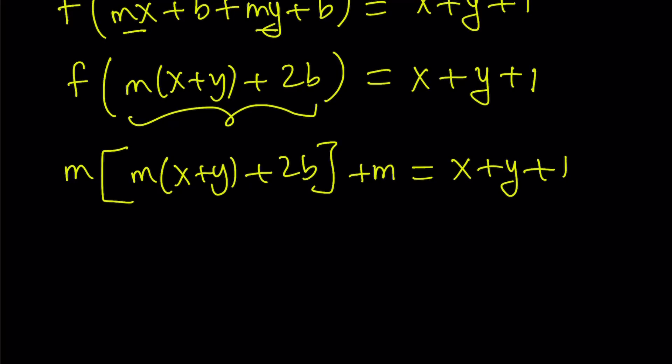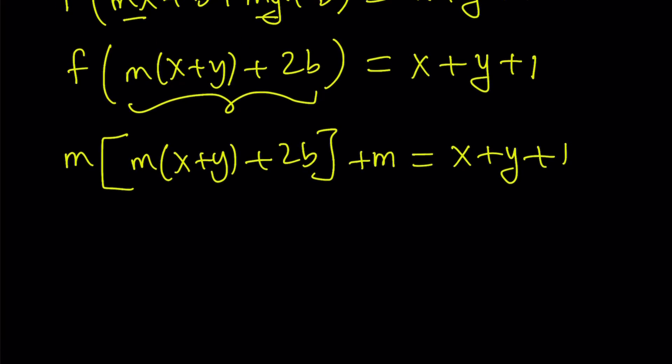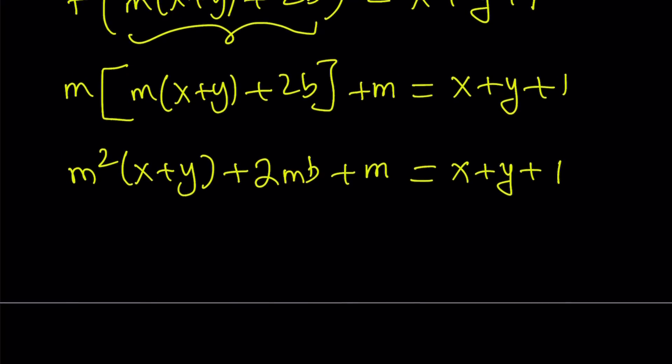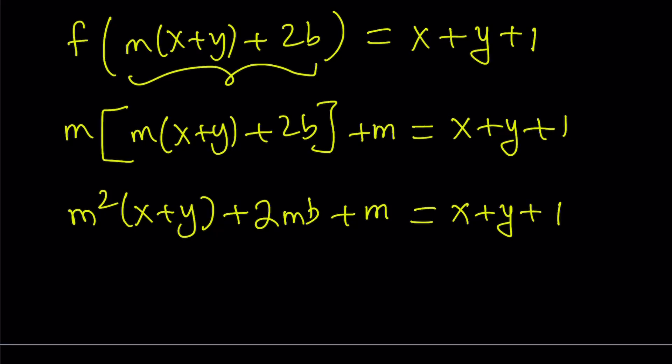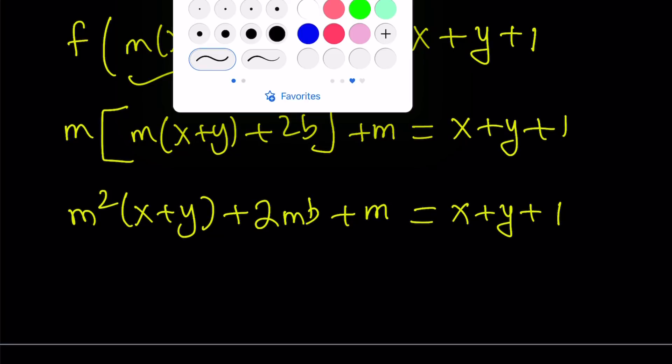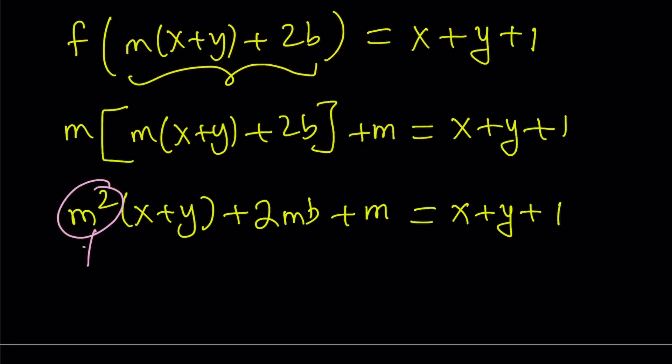Obviously, this equation should be true for all x, y values that are in the domain, so we're going to get kind of like a polynomial equation. This gives us m² times the quantity x + y. The reason why I don't want to distribute it is because I have x + y on the right-hand side, so it kind of works nicely. And now, from here, we get 2mb + b, and that equals x + y + 1. Now, comparing these two sides, we notice that the coefficient of x + y on the right-hand side is 1. And since this is true for all x, y values in the domain, this implies that m² = 1. And also this implies that 2mb + b = 1.